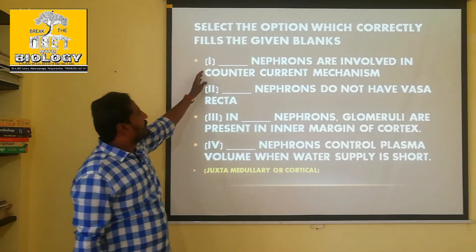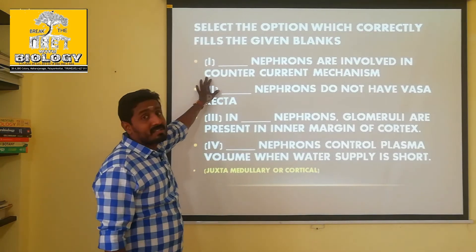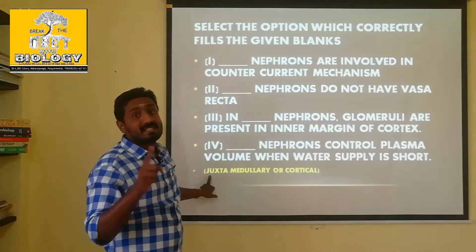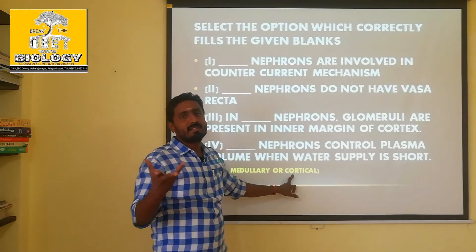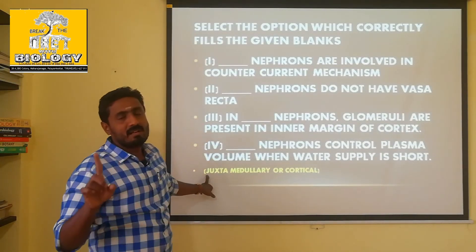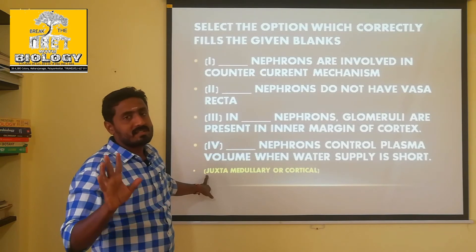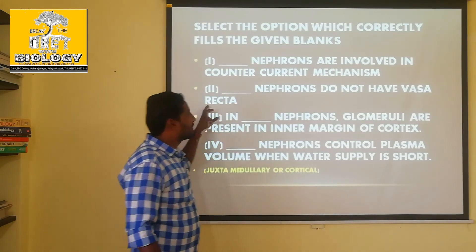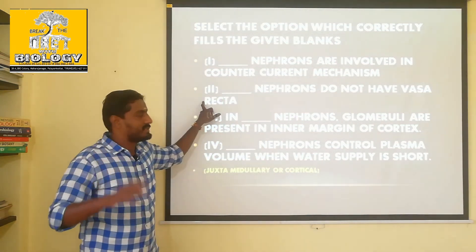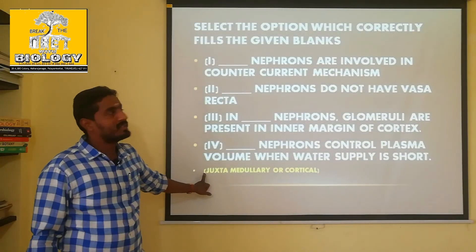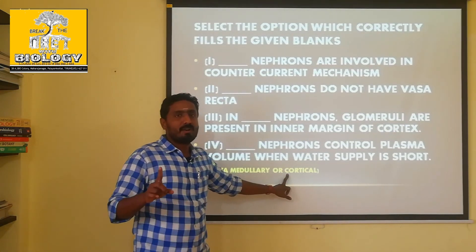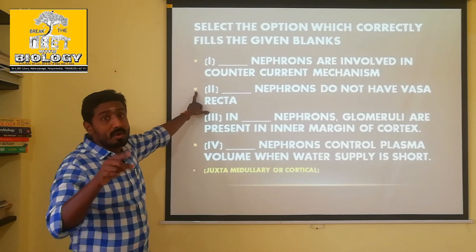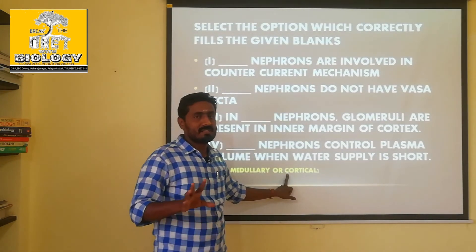First: nephrons involved in counter-current mechanism — what are they? If there is juxtamedullary, there is Vasa recta. Cortical nephrons do not have Vasa recta. So the answer for the first blank is juxtamedullary nephrons. For the second blank — nephrons that do not have Vasa recta — the answer is cortical nephrons.